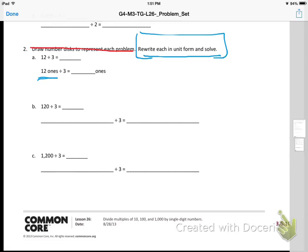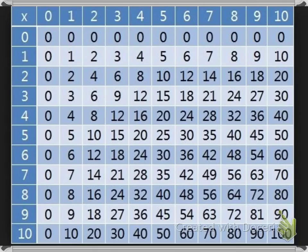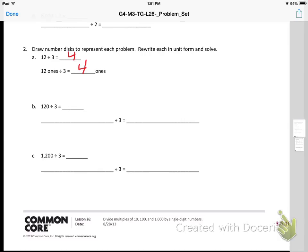So I can go to my multiplication chart to help me. I am dividing by 3, so I want to look in the 3 row. Here is the 3 row. Where is the answer 12? Here's a 12. To find out what 12 divided by 3 is, I need to look up to the top, and my answer is 4. So now I can fill that in. 12 ones divided by 3 equals 4 ones, and I write that as just a 4.